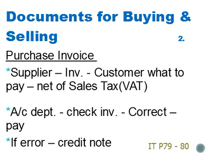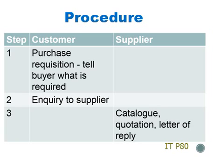If the accounts department finds anything wrong with the invoice, the supplier will be notified. If the supplier has made any errors, they will usually issue a credit note to correct the error — either by issuing a credit note for the whole invoice, which in effect cancels it, and then issuing a new invoice, or, if the amount is wrong, issuing a credit note to reduce the amount of the invoice to the correct amount. The procedures described are summarized in the table which follows.